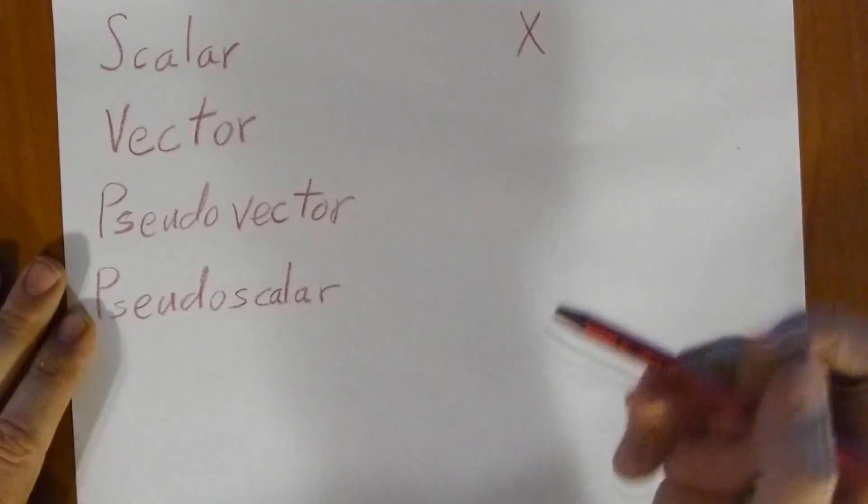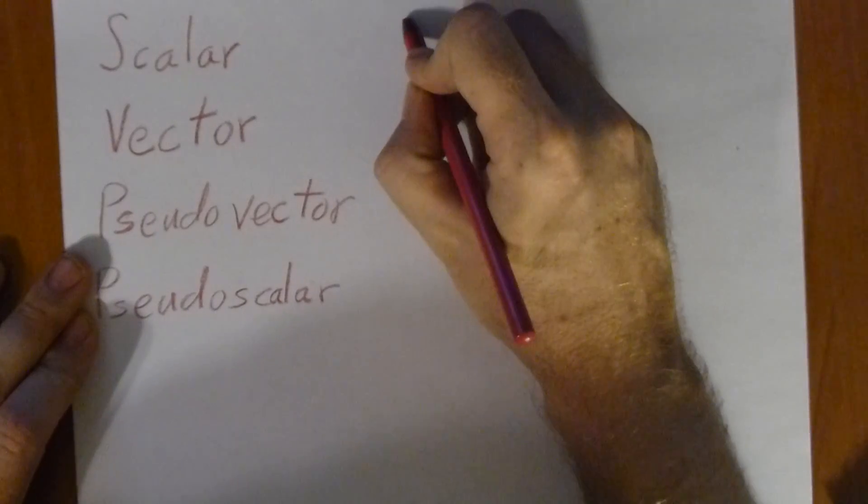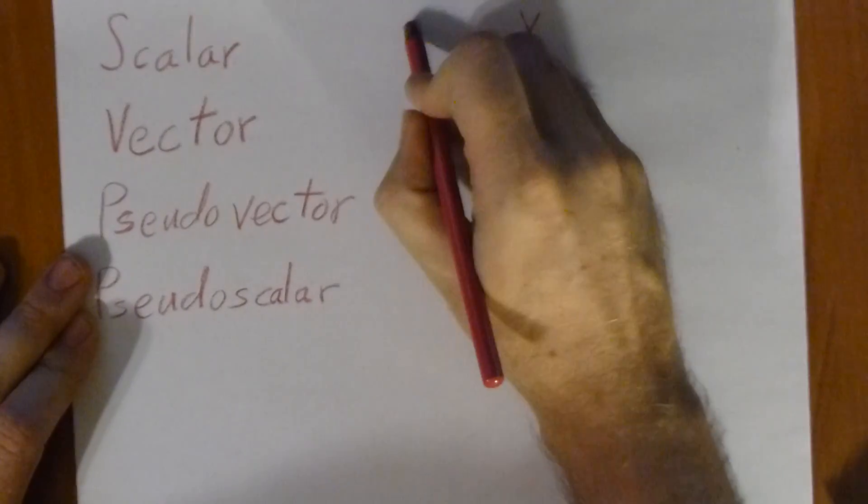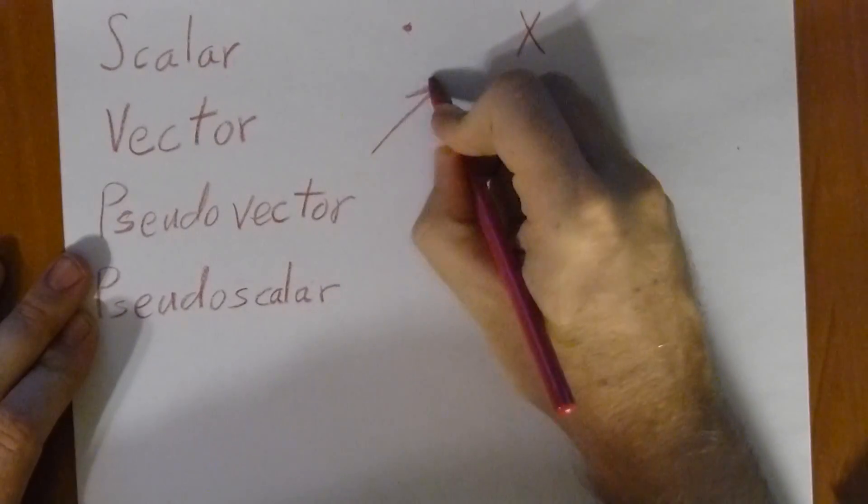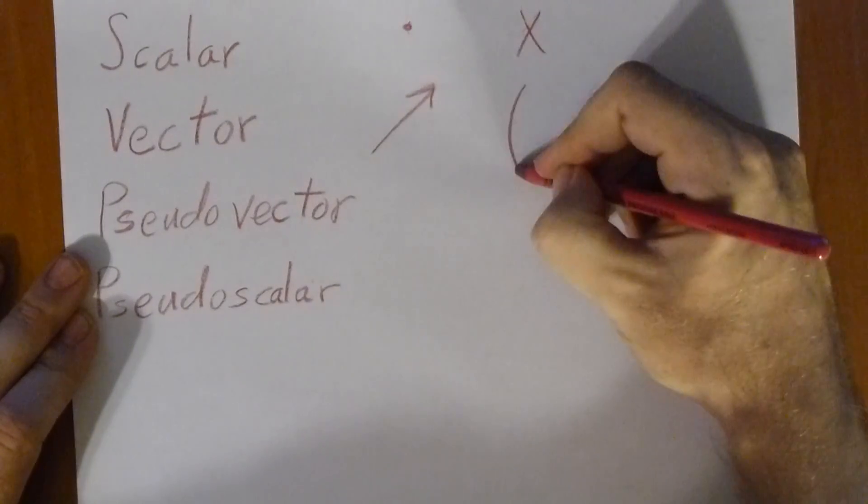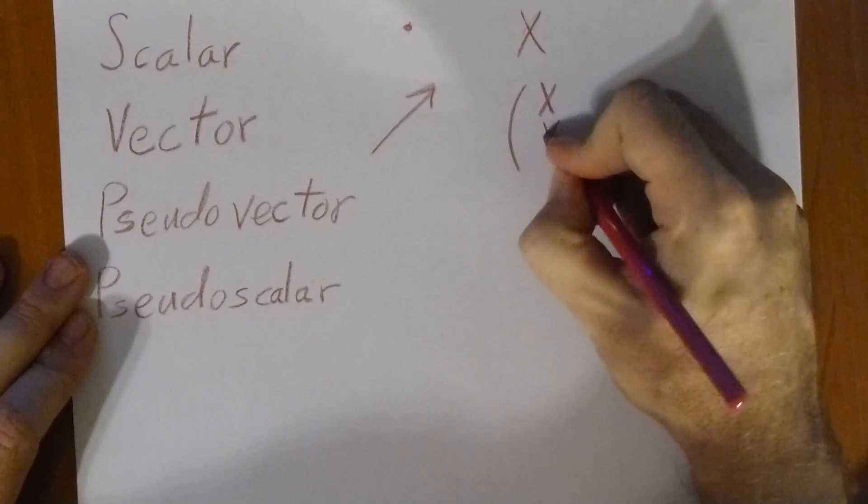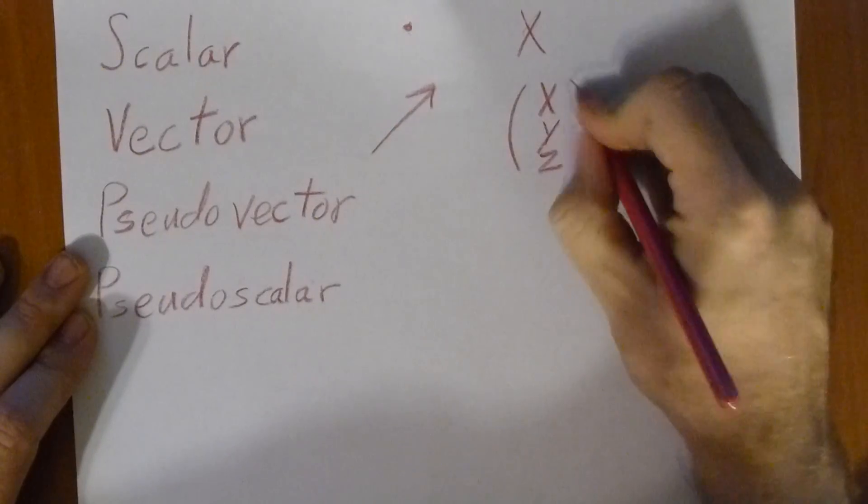Vectors, on the other hand, are something that can be represented—scalars would be like a point, a magnitude. A vector is an arrow. Mathematically, we want to write it as like an X, Y, Z.